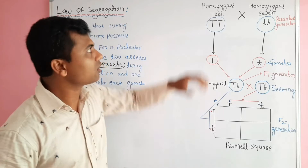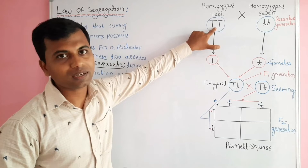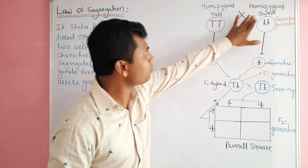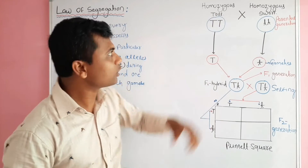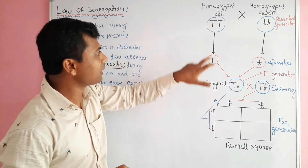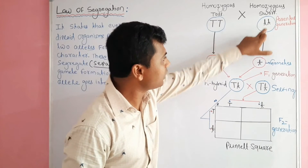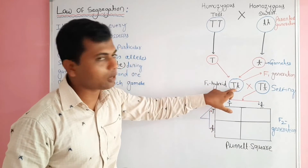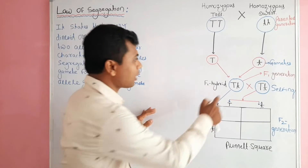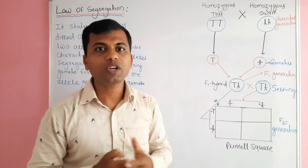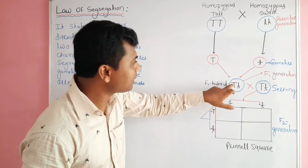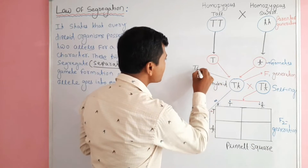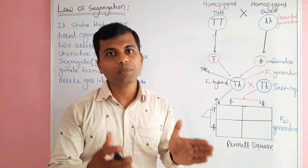When you cross two pea plants — one is homozygous tall with genotype capital T capital T, another is homozygous dwarf with genotype small t small t — tall and dwarf plants form the parental generation. During gamete formation, the tall plant forms gametes carrying capital T and the dwarf plant forms gametes carrying small t. By fertilization, these two gametes fuse to form the F1 hybrid. This F1 hybrid has two alleles for height: capital T and small t. According to the phenomenon of dominance and recessiveness, capital T is the dominant allele and it expresses, producing the tall character, so the height of the F1 hybrid is tall.